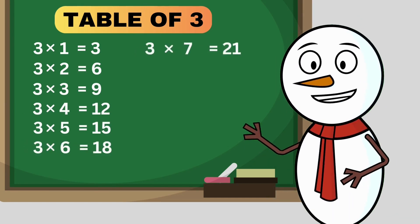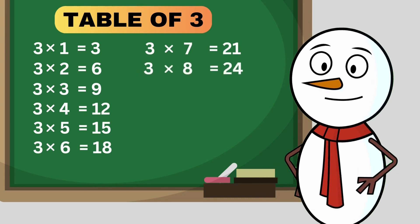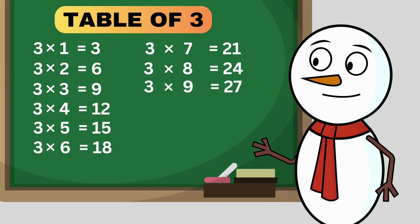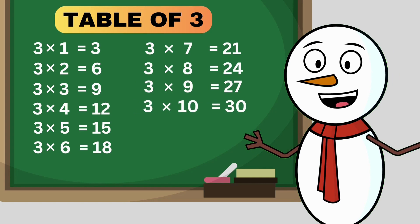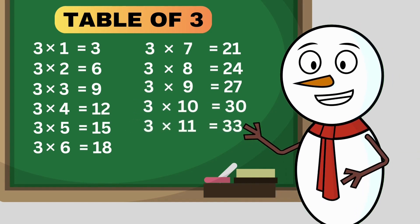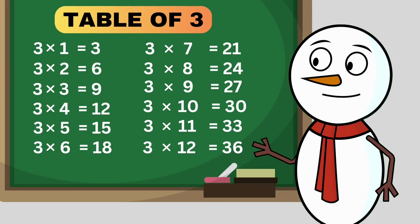3 times 7 is 21. 3 times 8 is 24. 3 times 9 is 27. 3 times 10 is 30. 3 times 11 is 33. 3 times 12 is 36.